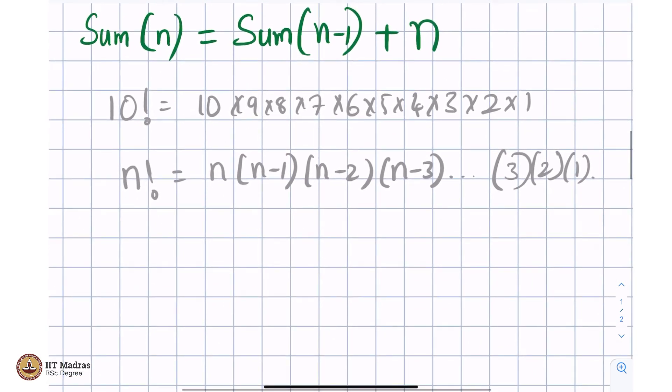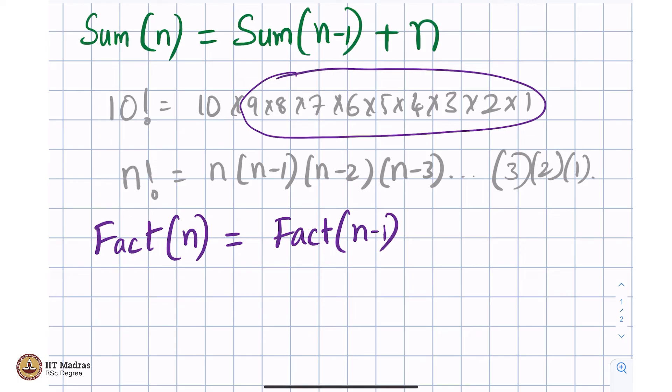Let me write this neatly, maybe with a different ink. Factorial of a number n is factorial of a number 1 less. You see what is happening? Factorial n - 10 factorial is 9 factorial, this entire thing, 9 factorial times 10. It can be seen like that. Fact(n) is Fact(n-1) times this entire thing, times n.